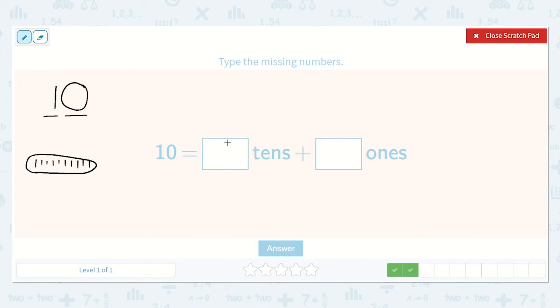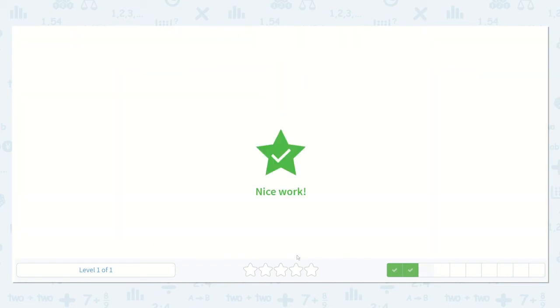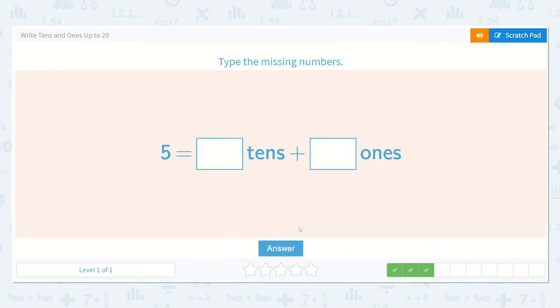So I have 1 group of 10. And how many ones do I have left over that are not circled? None. Which can be represented with a 0. 0 ones. So we can look at the tens place. There's 1 ten and there's 0 ones in the ones place. Wonderful. 1 ten and 0 ones.